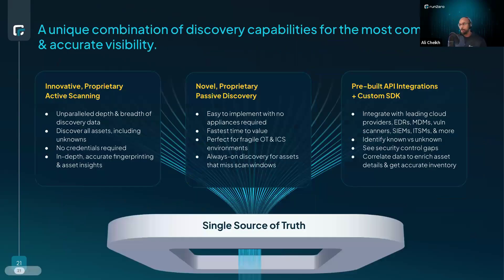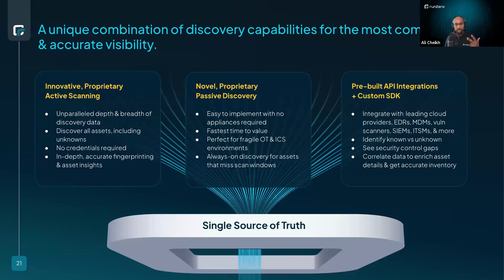There are five ways to do asset discovery: active scanning (unauthenticated and authenticated), passive discovery, API integrations, and agent-based discovery. RunZero employs three of these: the active scanner, passive discovery, and API integrations. Each approach is useful for a specific type of device or environment — no single approach covers everything.